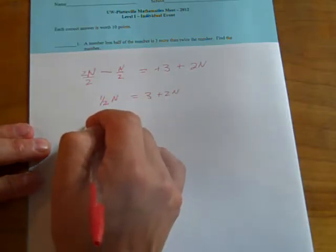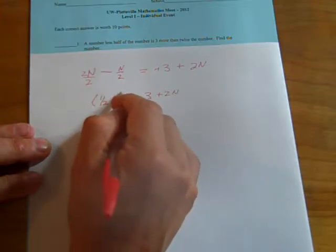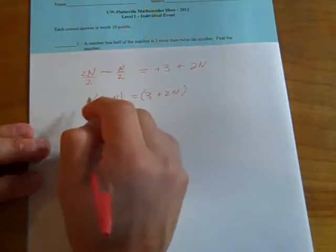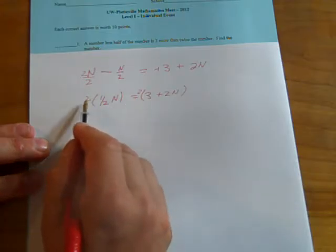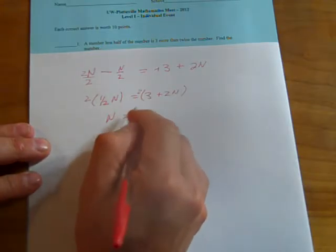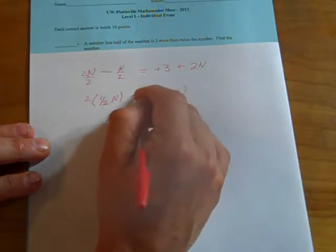I'm going to multiply both sides of this equation by 2. Because I hate fractions, and when I have an equal sign, I don't have to put up with it. 2 times a half is just 1. 6 plus 4n. We distribute the 2.